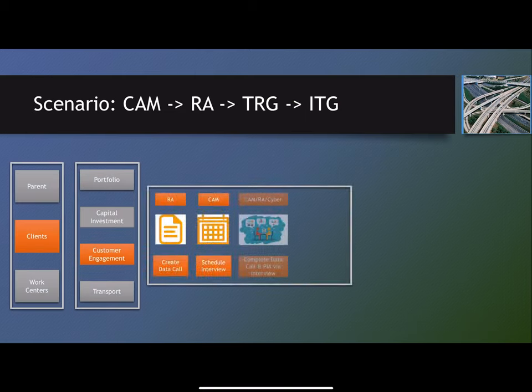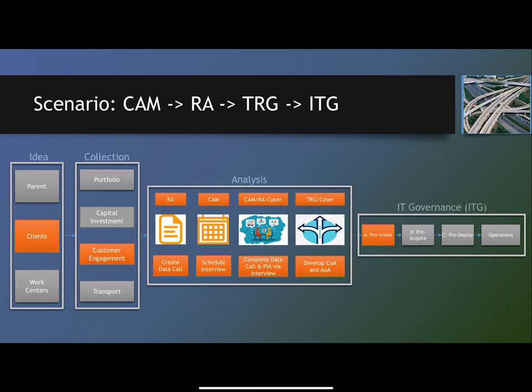The process we're talking about: the client submits a request through the CAM, that information is passed over to RA. RA takes that request, opens it up, and then determines what additional questions need to be answered in order to ensure that the center chiefs at the pre-investment decision have the information they need to make a well-informed decision. The RAs create a data call. That data call is passed back to the CAMs. The CAMs schedule an interview with the client and their SMEs. The client and their SMEs are interviewed by the CAMs, RA, and cybersecurity.